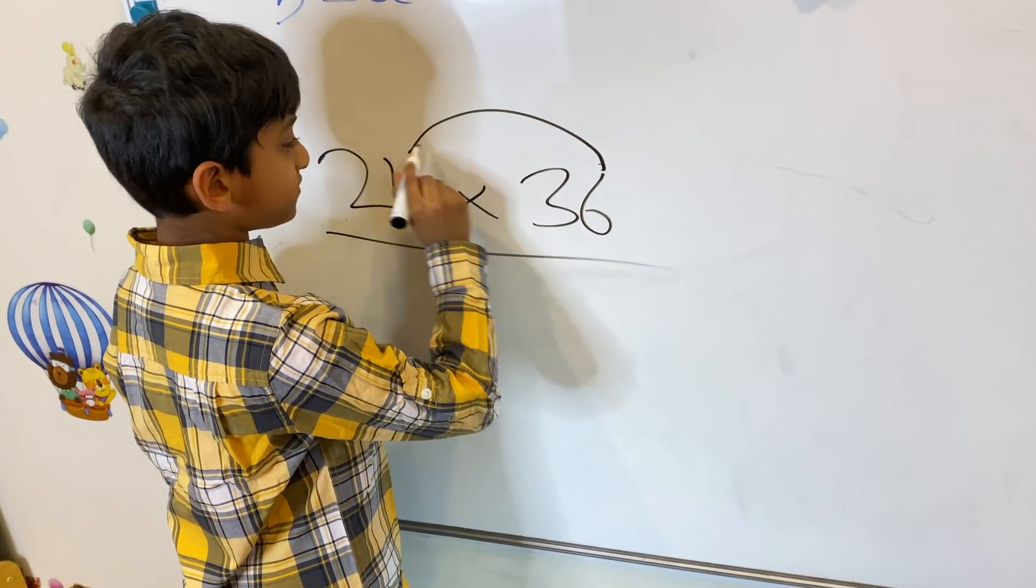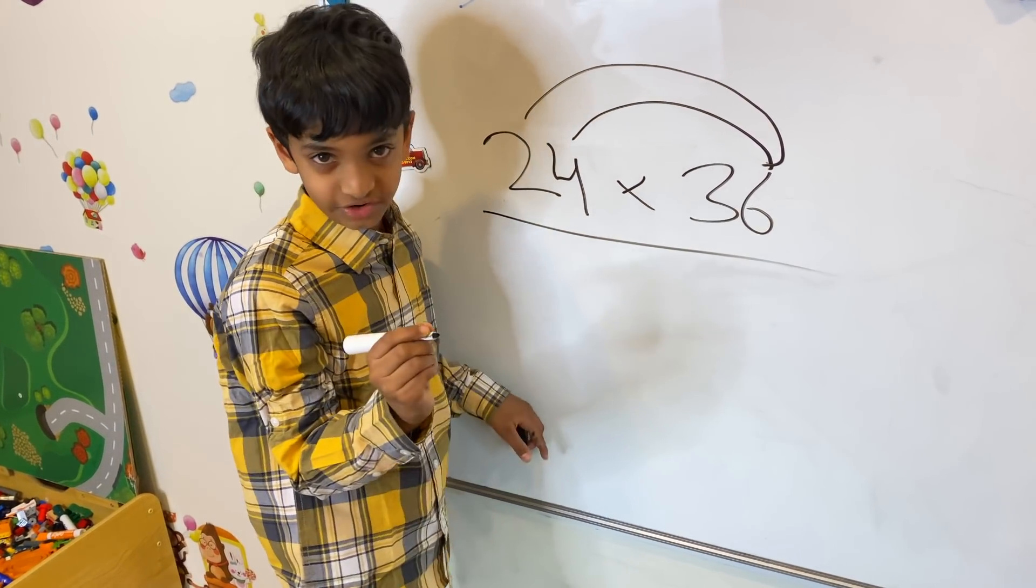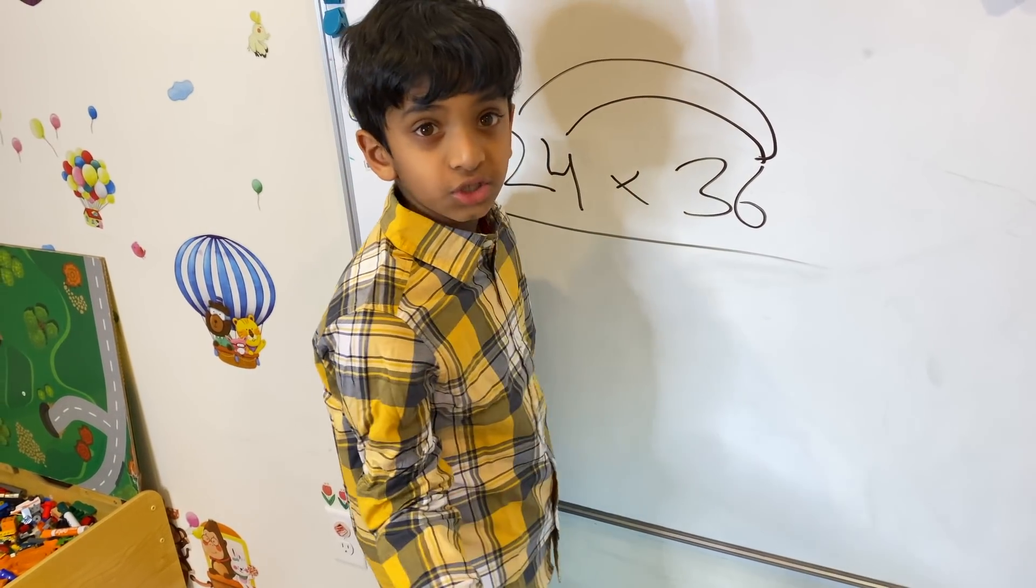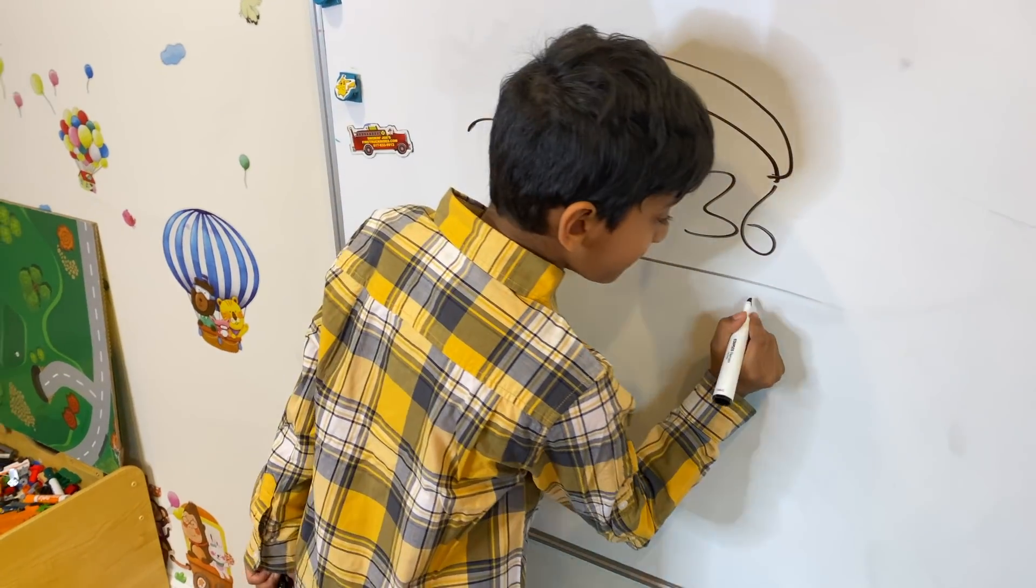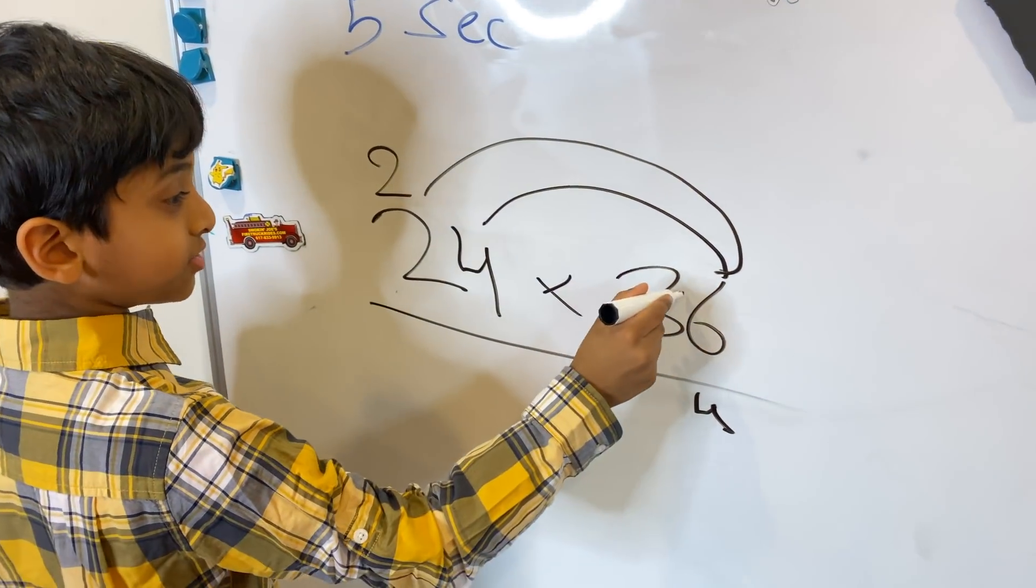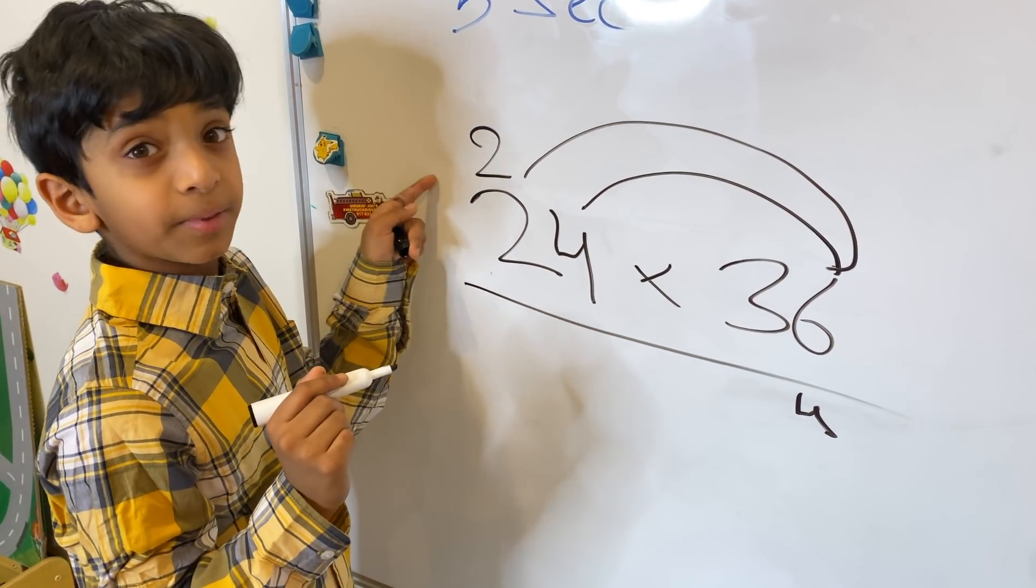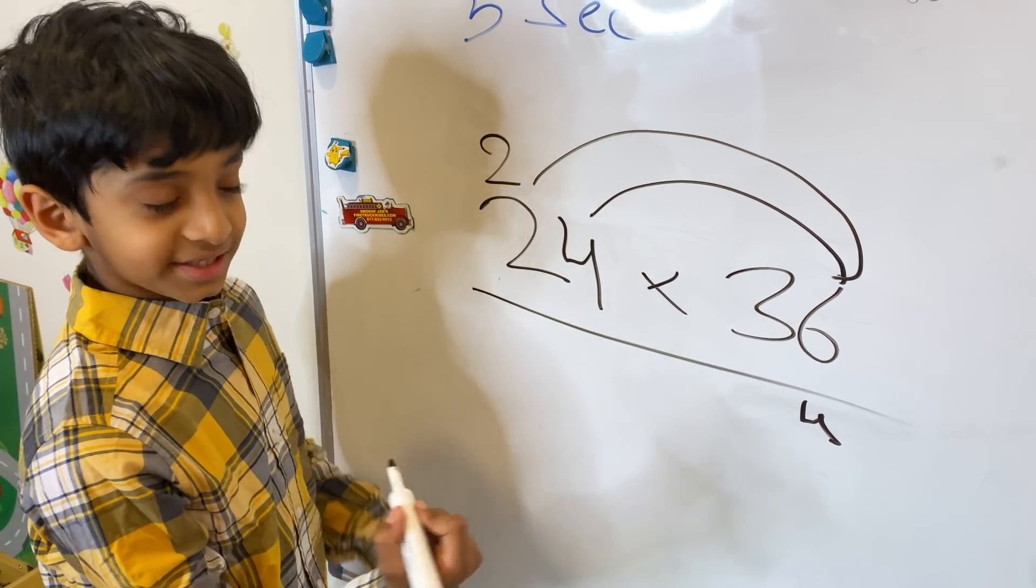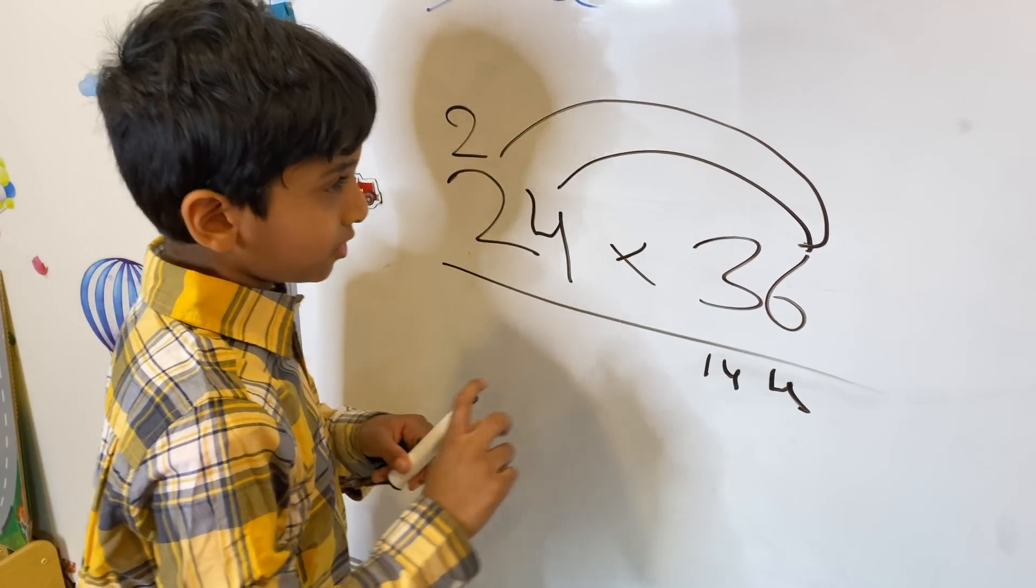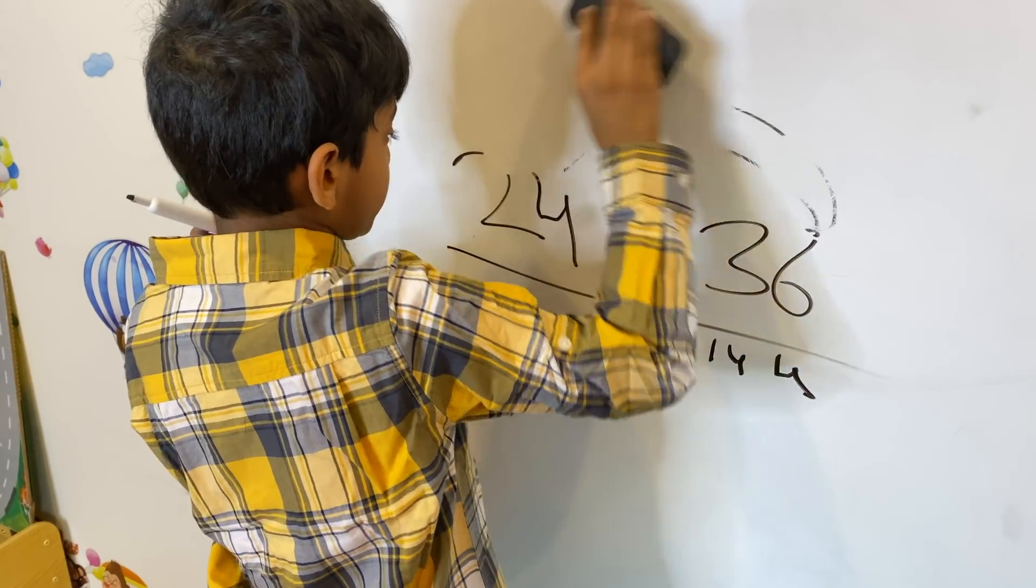First we need to do 6 times 4, then 6 times 2. We all know 6 times 4 is 24. But we can't put 24 in the units place, so we need to put 4 in the units place and put the 2 up here. Now we have to do 6 times 2, which is 12. But don't forget the 2 up here. So 12 plus 2 is 14. 144 is the first number.